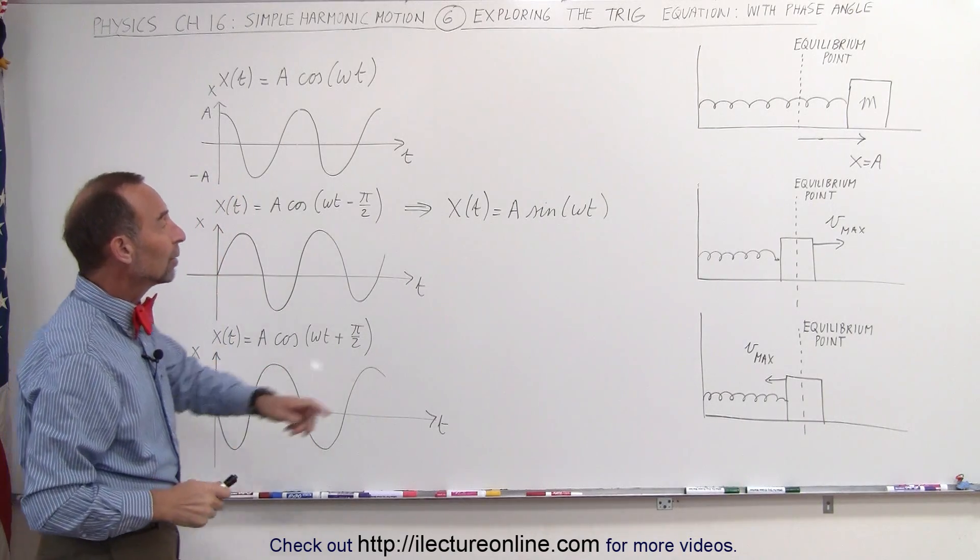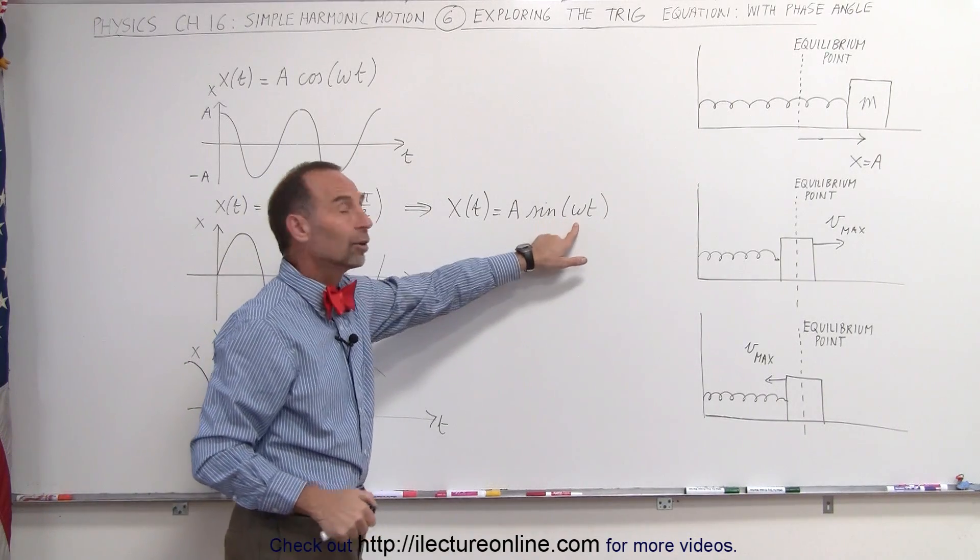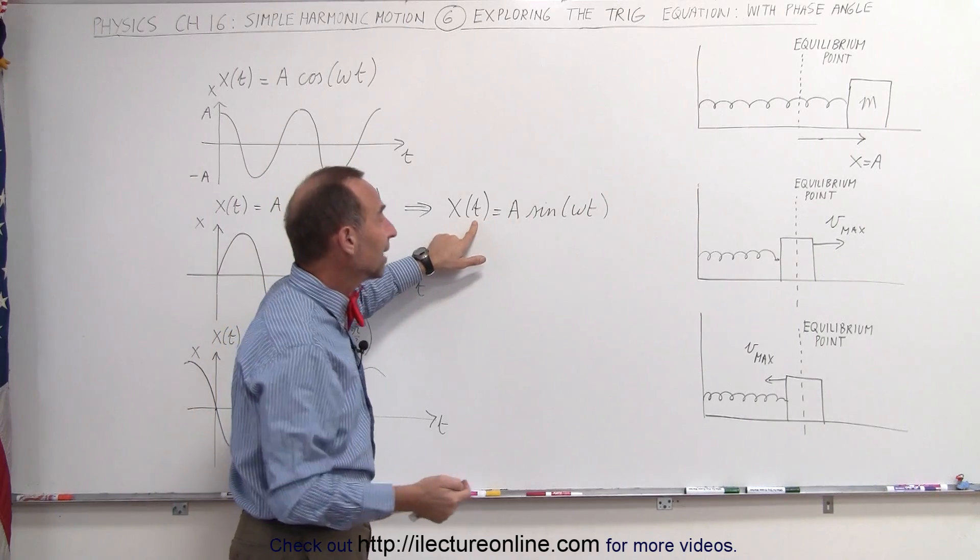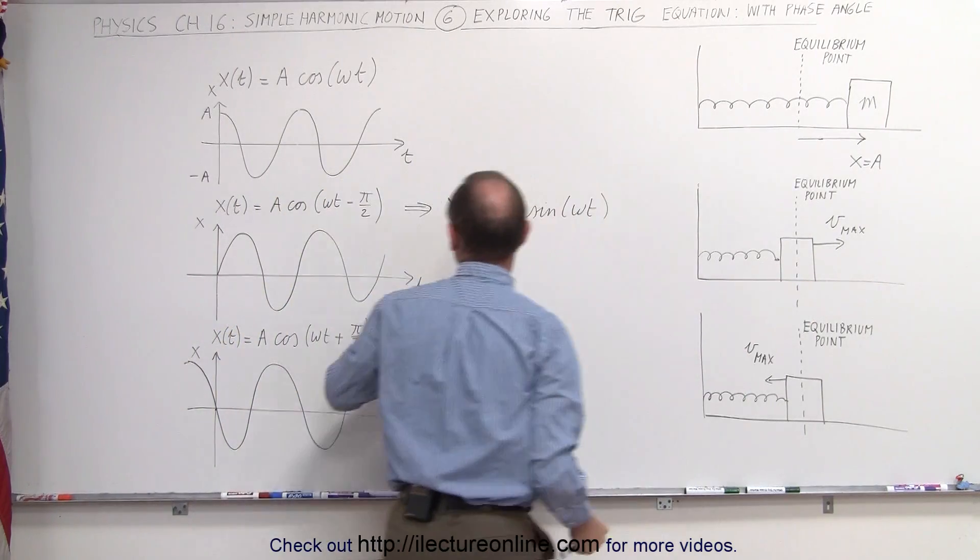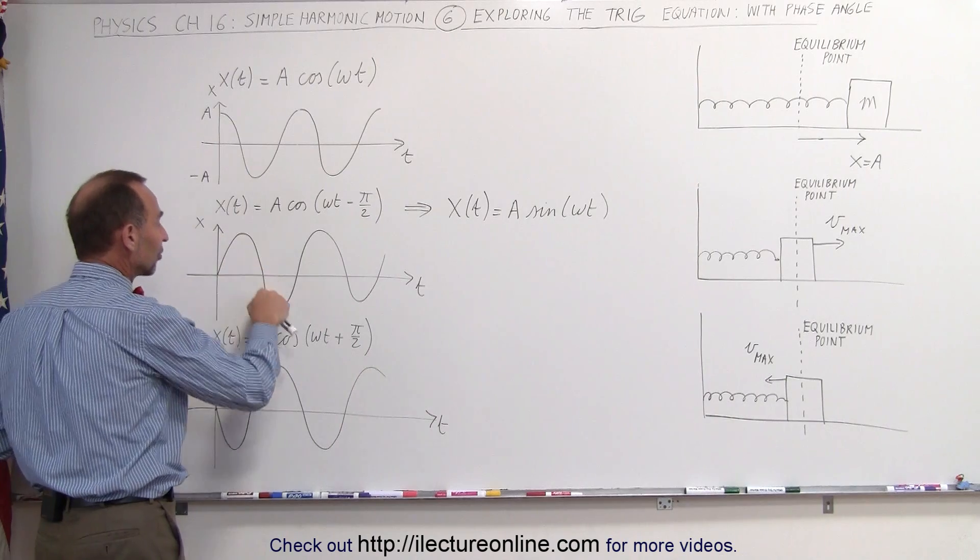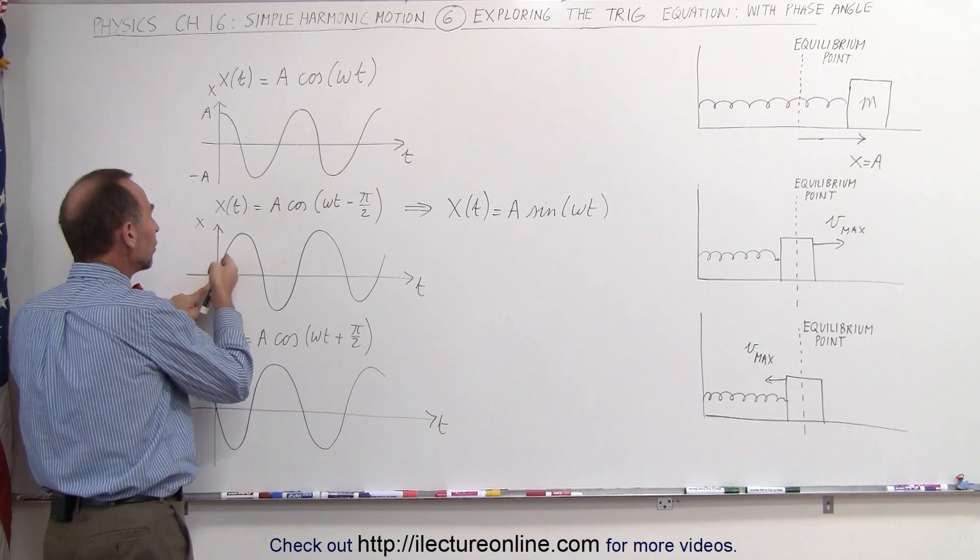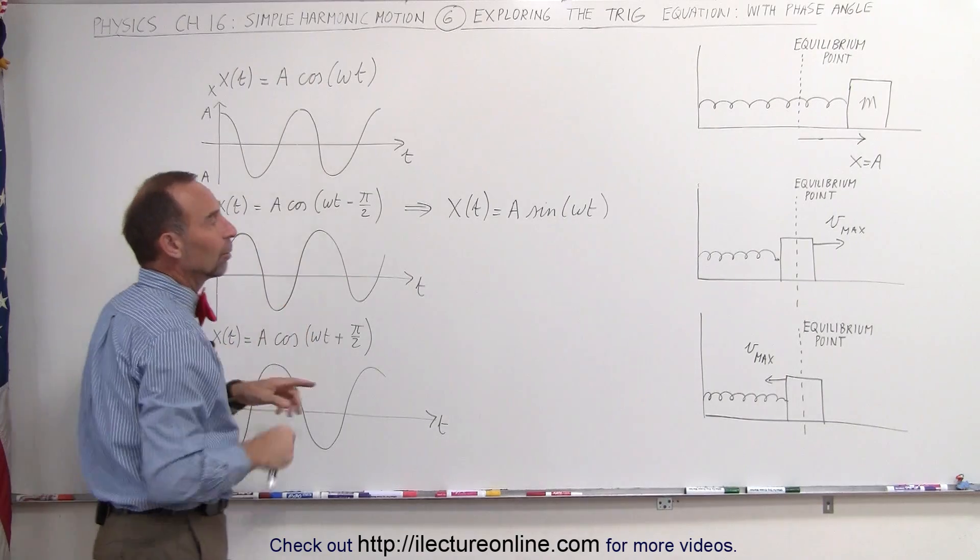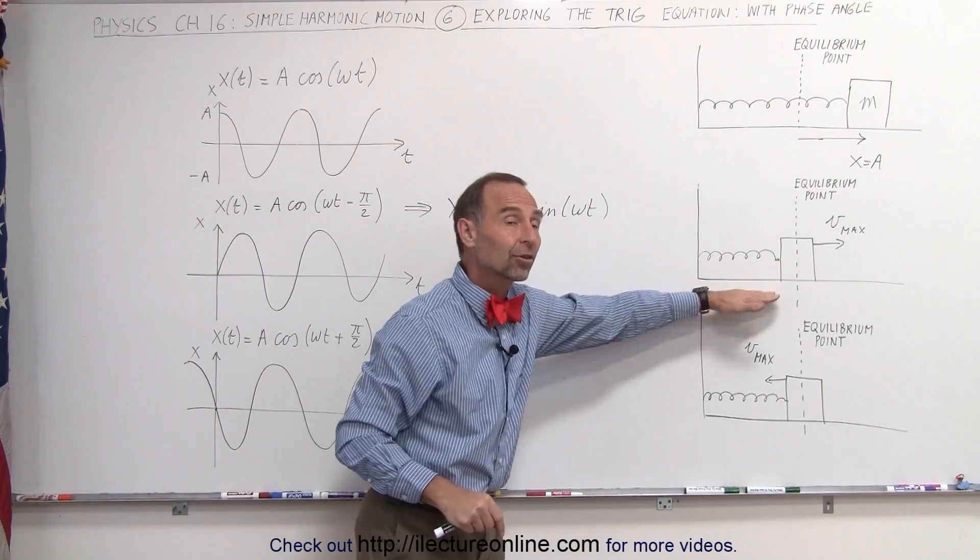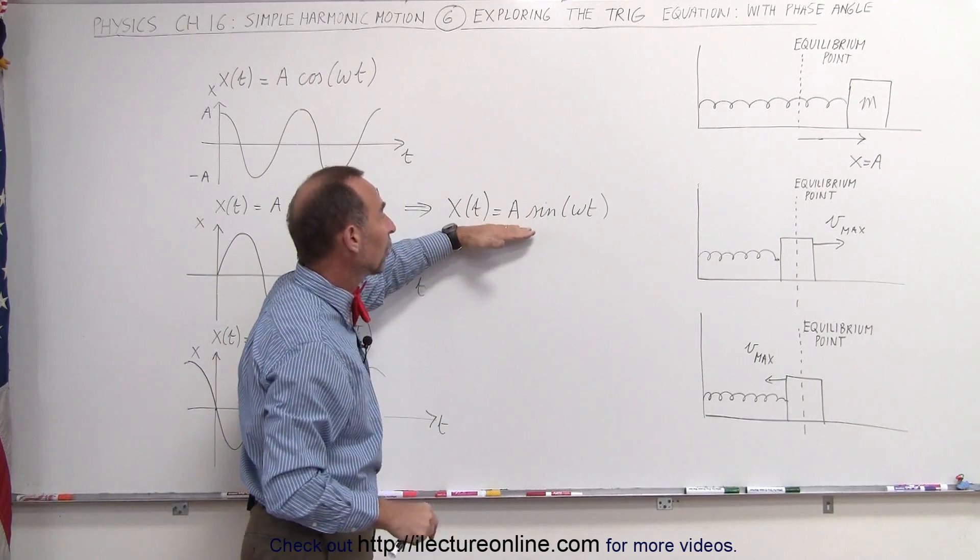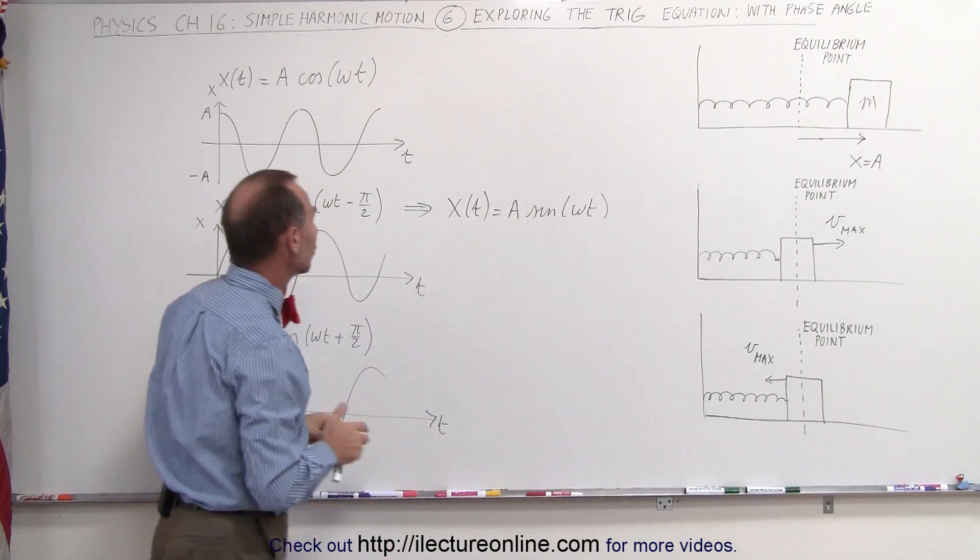Here you can see that when time equals 0, the sine of 0 is 0, so therefore it's at the equilibrium point. But with a sine function, also notice that the sine function looks like this, which means that as time goes on, immediately the block will begin to move to the positive x direction, which means that this is also the right picture depicted by this particular equation and those particular initial conditions.